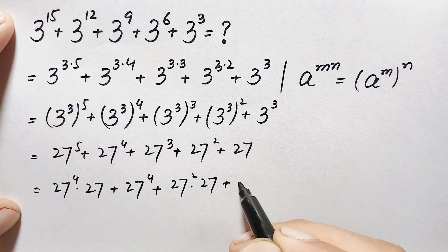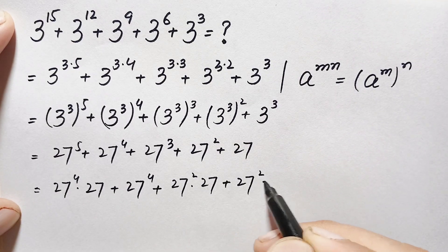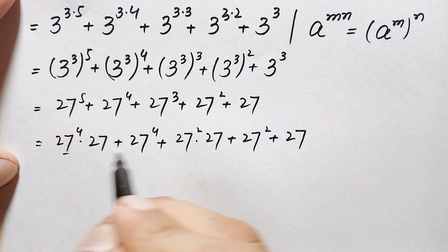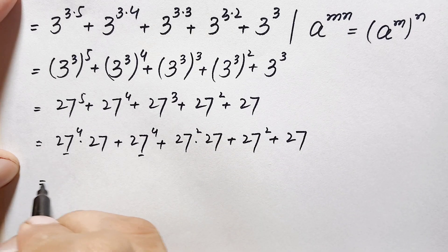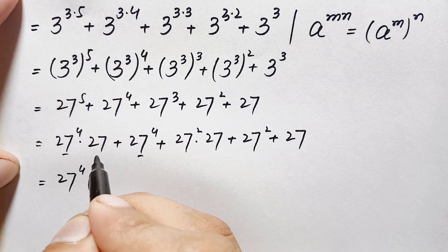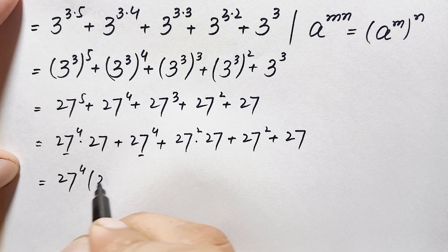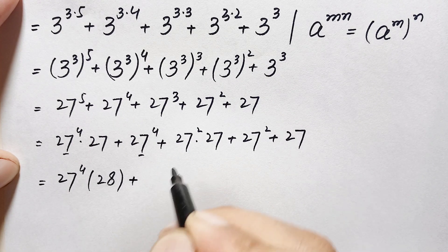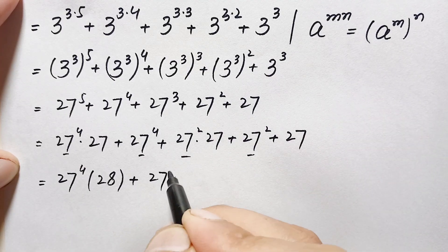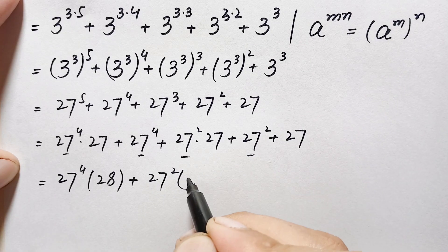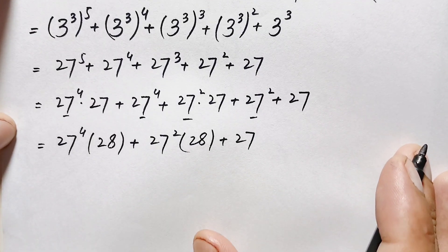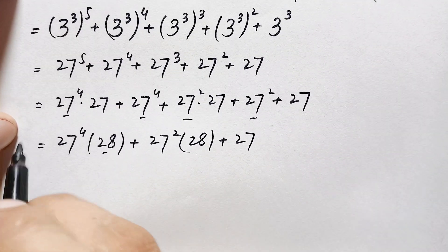Now we look at factoring. We can write 27 to the power 4 as common in the first two terms, leaving 27 plus 1, which is 28. Similarly, taking 27 squared common from the next two terms gives 27 squared times 27 plus 1, which is again 28.